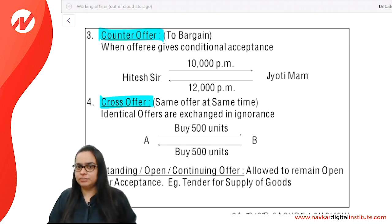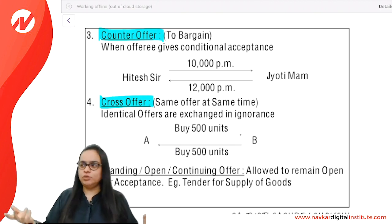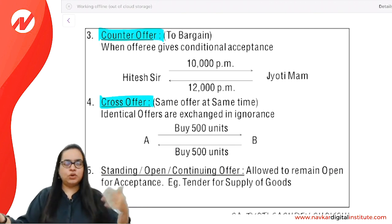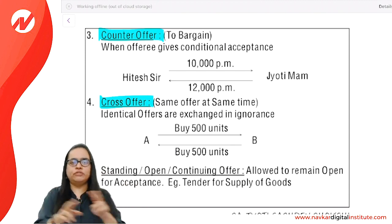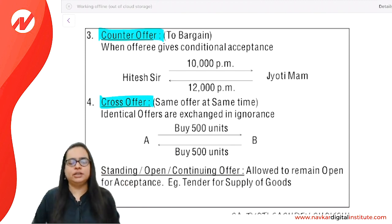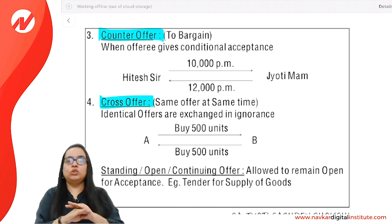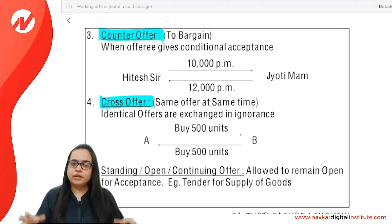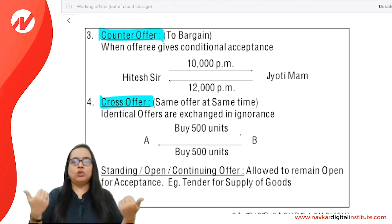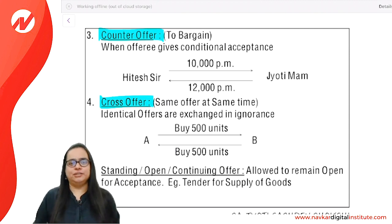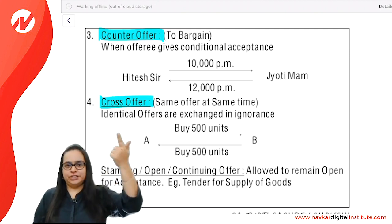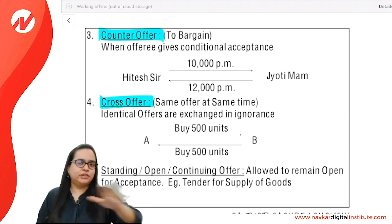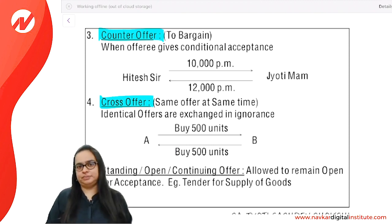Cross offer: when two parties make the same offer to each other simultaneously. Due to the confusion of which offer becomes valid, both offers are cancelled. In a counter offer, the first offer is cancelled; but in a cross offer, both offers are cancelled.